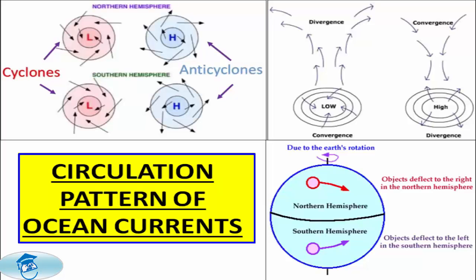The air circulation over the oceans in the middle latitudes is mainly anti-cyclonic, which is more pronounced in the Southern Hemisphere than in the Northern Hemisphere. At higher latitudes where the wind flow is mostly cyclonic, the oceanic circulation follows this pattern. In regions of pronounced monsoonal flow, the current movements are influenced by the monsoon winds, such as in India.